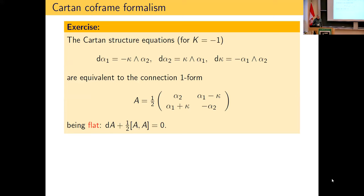In the special case of a hyperbolic metric where the Gauss curvature is −1, the structure equations simplify and are actually equivalent to having a flat connection. You arrange the one-forms α₁, α₂, κ in a 2×2 matrix and think of this as a connection one-form; then these three equations are equivalent to that connection one-form being flat — being a Maurer–Cartan form. Not a difficult exercise: just do the calculation.